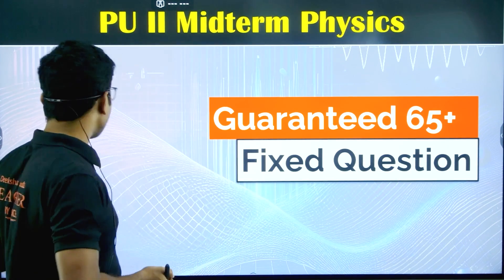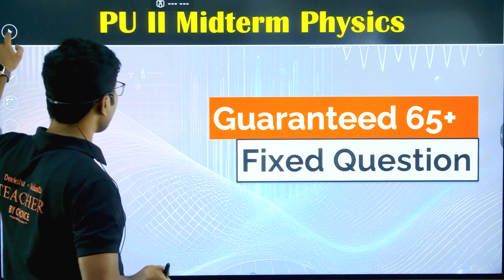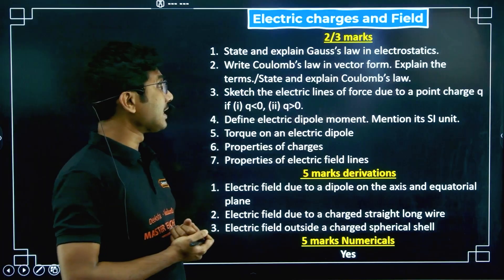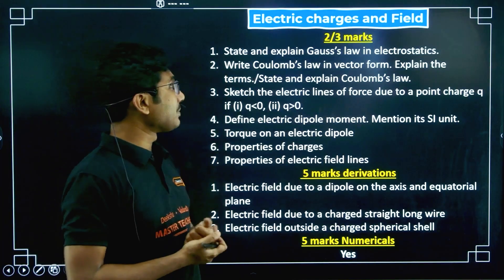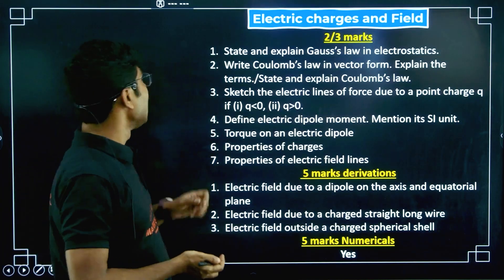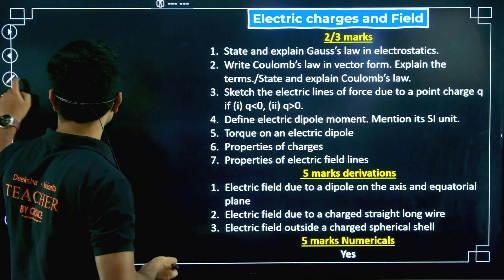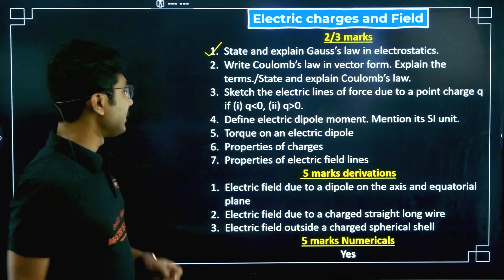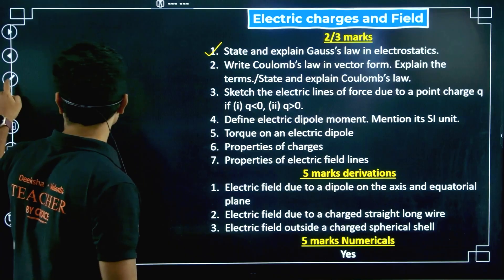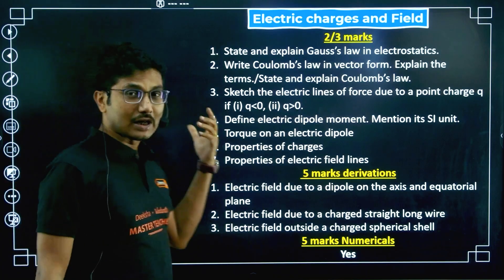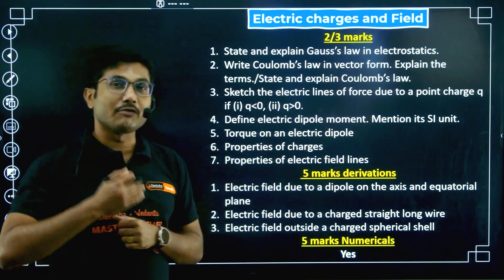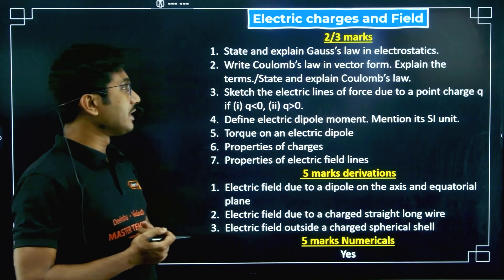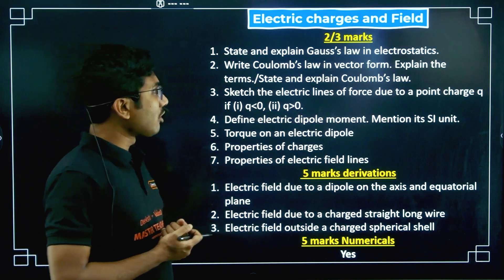Now I am going to discuss all the important questions that might come in your PU midterm exam. First, we are going to discuss the chapter Electric Charges and Fields. State and explain Gauss's law in electrostatics — you can take a screenshot of this and mark it as complete once done. The PDF will be shared on our WhatsApp channel. State and explain Gauss's law in electrostatics, and write Coulomb's law in vector form.